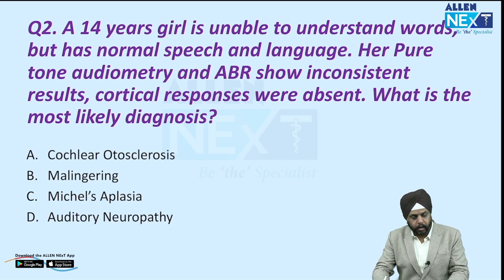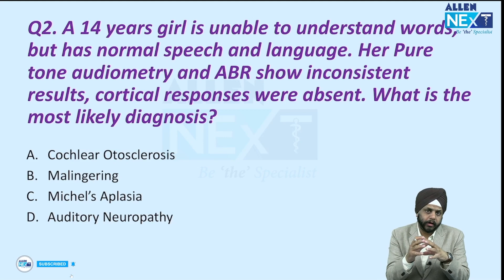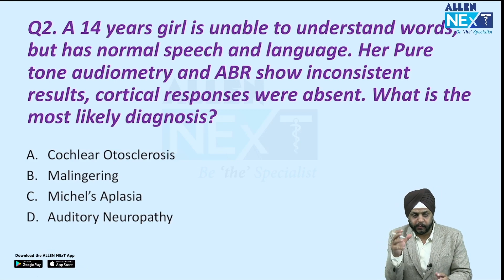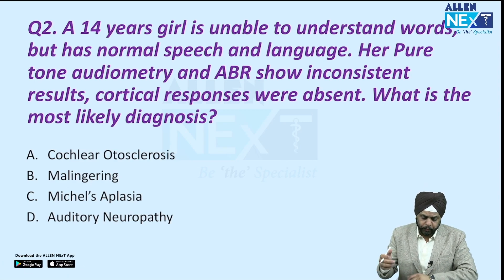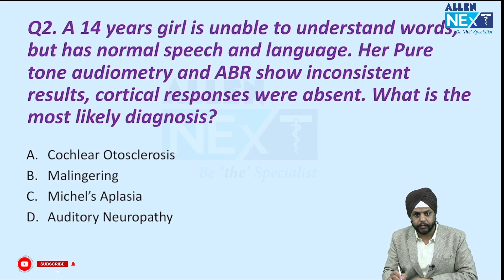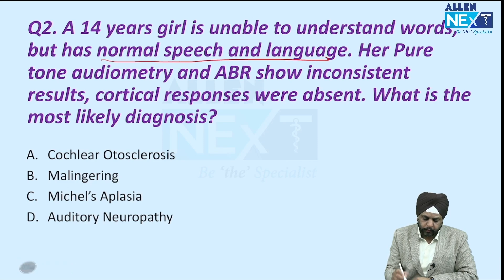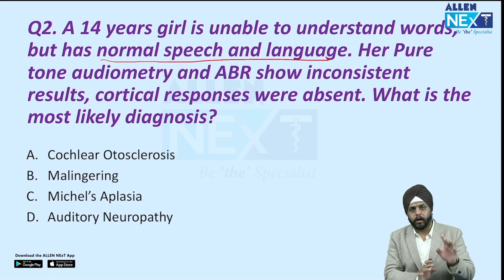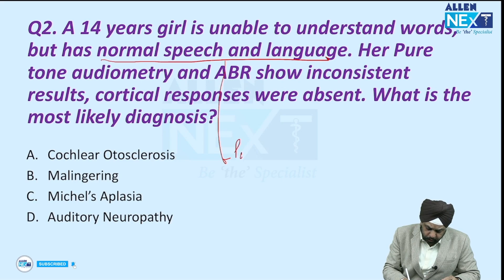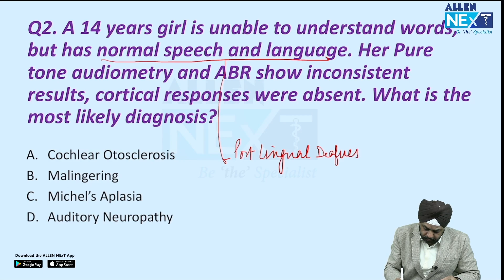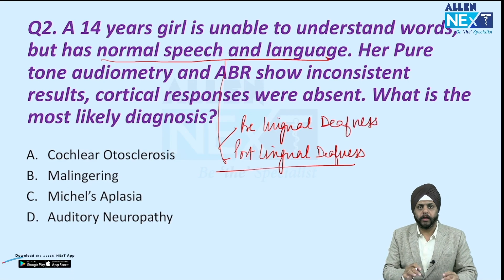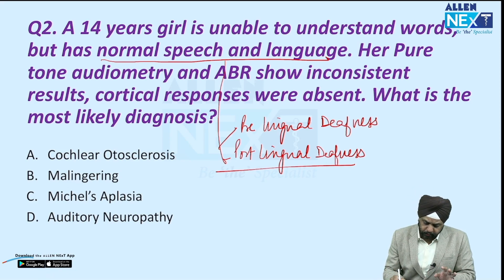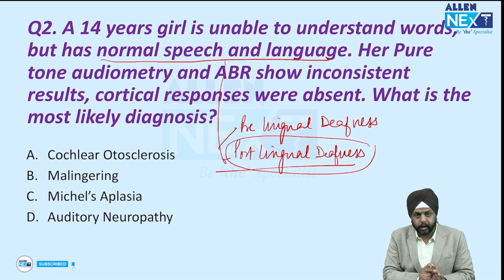This is a very interesting question, and I know it's going to have multiple controversial answers from different faculties because the language is a little tricky. A 14-year-old girl is unable to understand words but has normal speech and language. That means she cannot understand words but has normal speech, which automatically tells you this girl has postlingual deafness — not congenital. There are two types: prelingual and postlingual deafness, and this girl has postlingual deafness with no congenital anomaly.